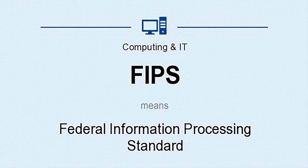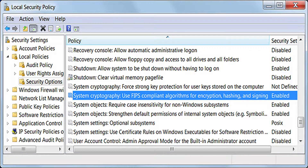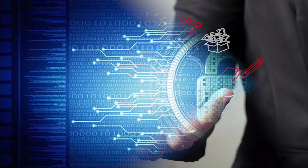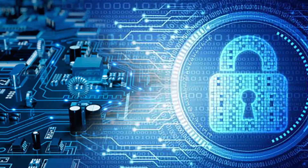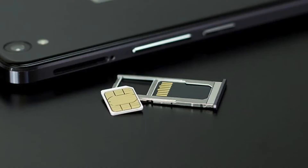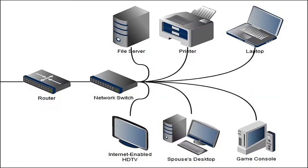DES was adopted as an official Federal Information Processing Standard (FIPS) in 1977 by the US government for the encryption of commercial and sensitive yet unclassified government data. It was the first encryption algorithm approved by the US government for public disclosure. This ensured that DES was instantly adopted by industries such as financial services where the need for strong encryption is high. DES was also used in a variety of embedded systems, smart cards, SIM cards and network devices requiring encryption, such as modems, set-top boxes and routers, due to its simplicity.